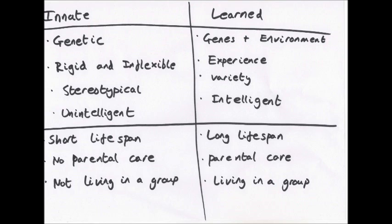We have learned behaviour if we have a long life span so we have time to learn, parental care so you can learn from your parents, and generally live in a group so you can learn from each other. Innate behaviours are for organisms with a short life span that don't have parental care and don't generally live in a group. This applies a lot to invertebrates like insects.